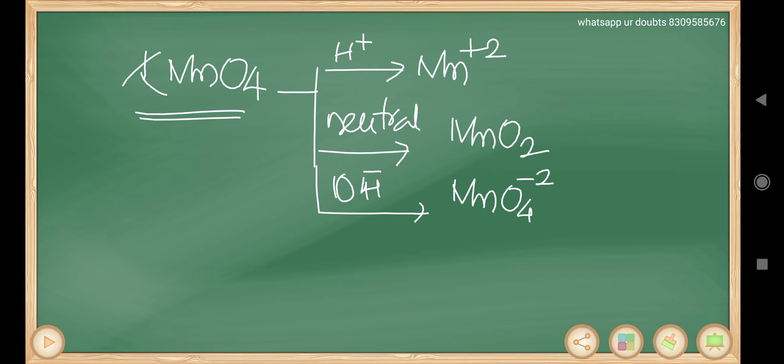To recap: in acidic medium, KMnO4 changes to Mn²⁺; in neutral or weakly basic medium, it changes to MnO₂; and in strongly basic medium, it changes to MnO₄²⁻.